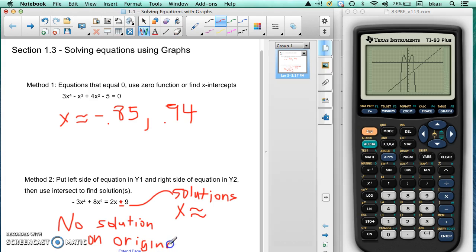So there's no solution on the original problem. We're just trying to practice to see how we would do it if we had a solution. So now it's crossing twice.